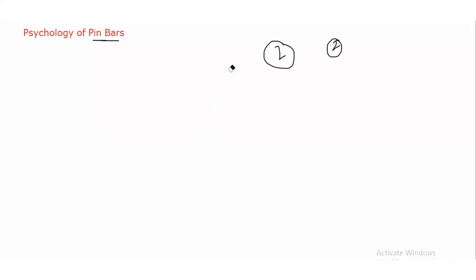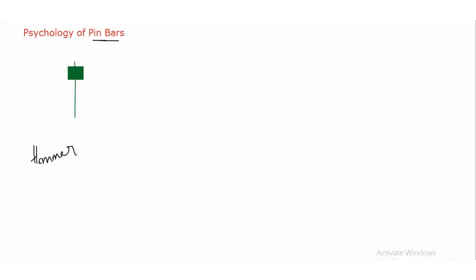Let me mark the first pin bar: a body with a long tail at the downside, and the color of this candle is green. This candle can be called a hammer. The shape is giving us the formation of a hammer, that's why we are naming it the hammer candlestick pattern. Let me tell you what is the importance of this hammer candlestick pattern.